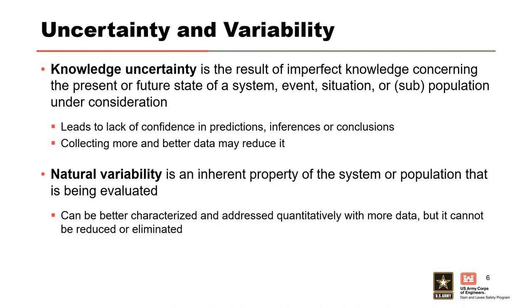We are sometimes unsure of our model's ability to adequately represent reality, and we also have uncertainty in the parameters we put into the model, which can be due to a limited amount of data or difficulties in measurement. Natural variability is the inherent randomness in a natural process or property — it can be better characterized with more data, but in principle cannot be reduced or eliminated. In any practical risk analysis, how we classify uncertainty as aleatory or epistemic is up to the modeler and will generally be a property of the model rather than the real world. We often model uncertainties as if they were random, even though they stem from a lack of knowledge — like soil properties — approaching data scatter as if it results from a random process out of convenience.